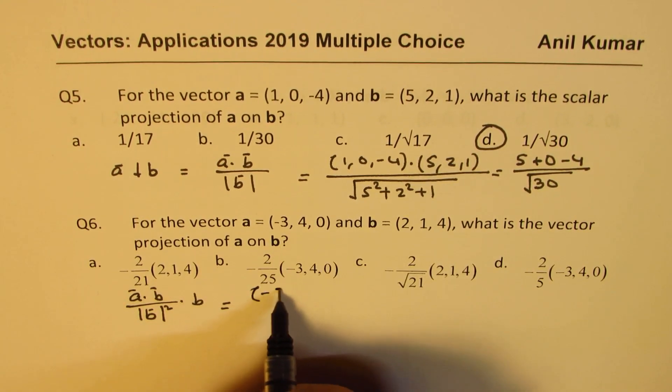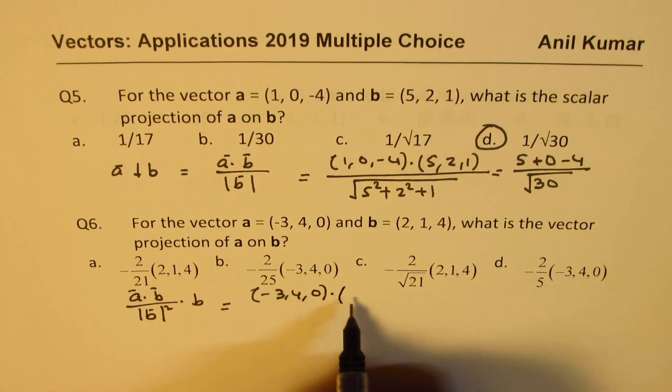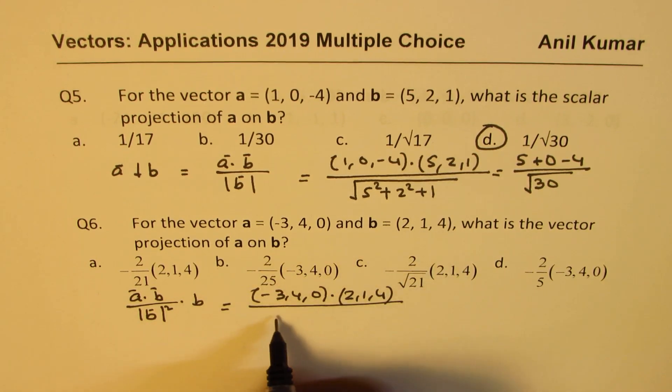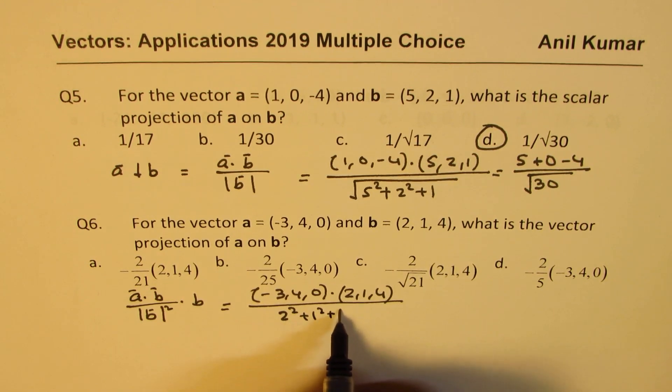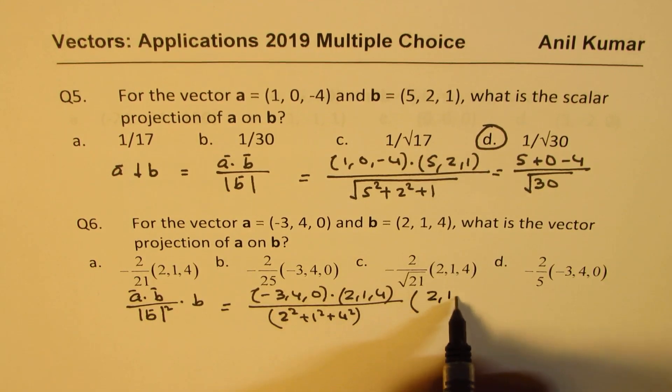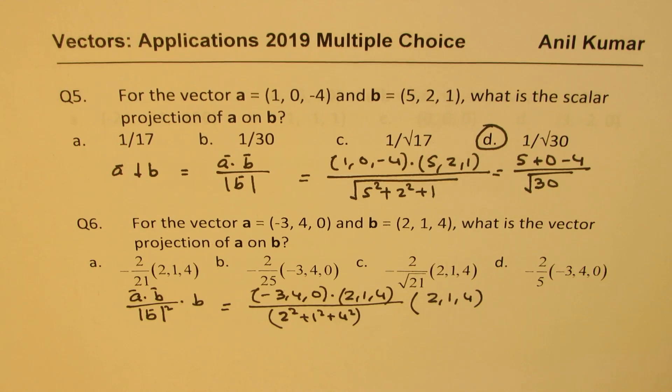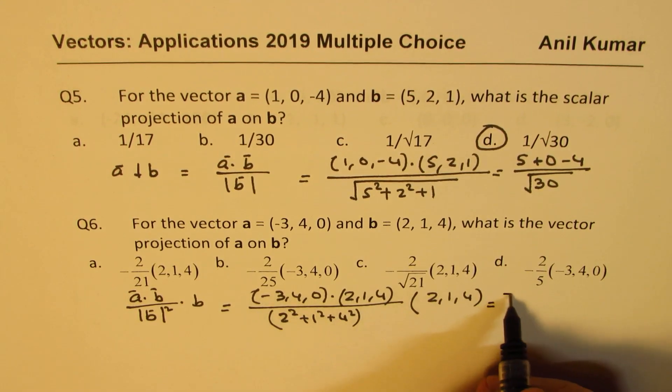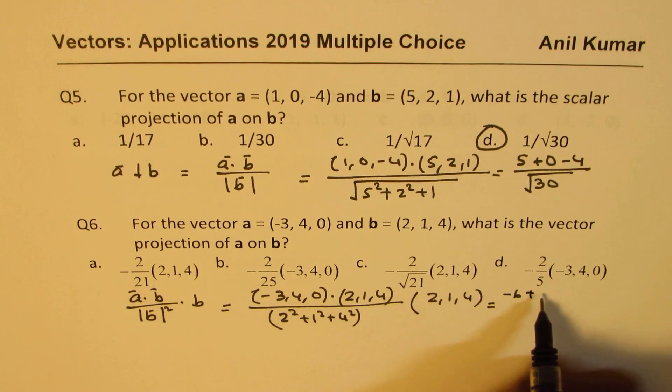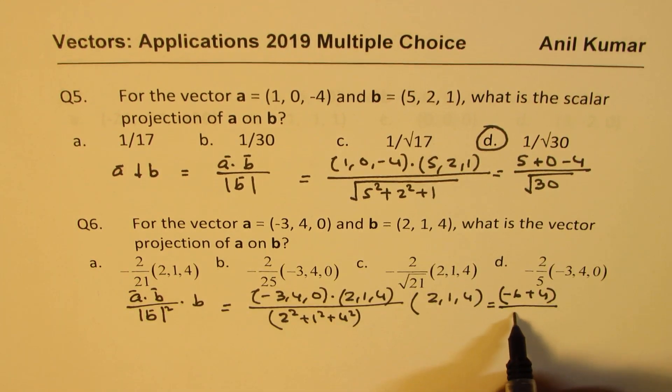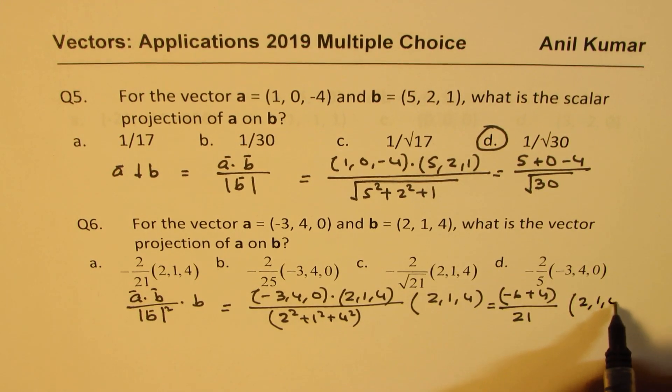Let's do the dot product, (-3, 4, 0) dot (2, 1, 4), and the magnitude of B will be squared, so that means we have 2 squared plus 1 squared plus 4 squared. And the vector B, which is (2, 1, 4). So that gives us, this is the scalar multiple. So what we get here is minus 6 and 4 plus 4. So that is over this magnitude, which is 4 plus 1, 5, and 16 is 21, and that is the vector (2, 1, 4). So we get here, when you take away 6, you get minus 2 over 21 and (2, 1, 4).